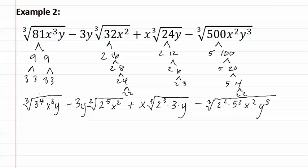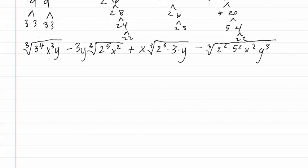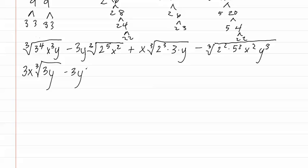Now we need to simplify each of these radicals. Remember, we do this by taking the exponent and dividing it by the index. Four divided by three gives us a three that comes out and a three that stays in. Next, x to the third means an x comes out with no x's left over. The y stays in, and remember to bring down the cubed root. For the next term with negative three y outside: two to the fifth means one two comes out and two twos stay in. The x squared stays in — bring down the cubed root.